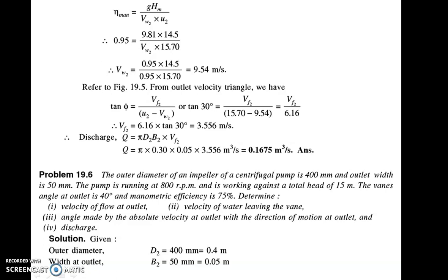Let us see the next numerical on centrifugal pump. The outer diameter of an impeller is 400 mm (D2), and outlet width is 50 mm (B2). The pump is running at 800 rpm (N), and is working against a total head — the manometric head — of 15 meters. The vane angle at outlet is 40 degrees, and the manometric efficiency is 75 percent.